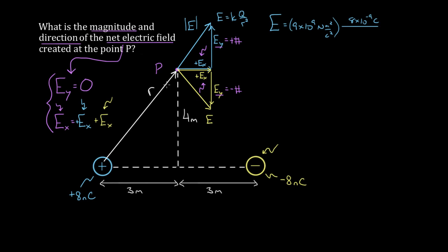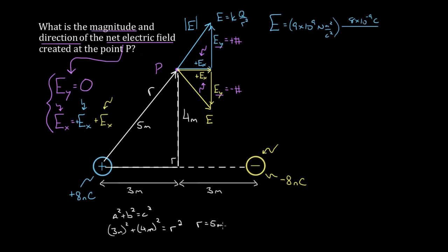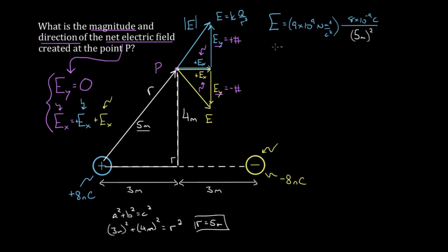If you're not comfortable with the 3-4-5 triangle, you can use the Pythagorean theorem: A squared plus B squared equals C squared. Three squared plus four squared equals R squared, so nine plus sixteen gives R equals five meters. Using R equals five meters squared in the formula, you get an electric field magnitude of 2.88 newtons per Coulomb. This is the magnitude of the electric field created at point P by the positive charge.